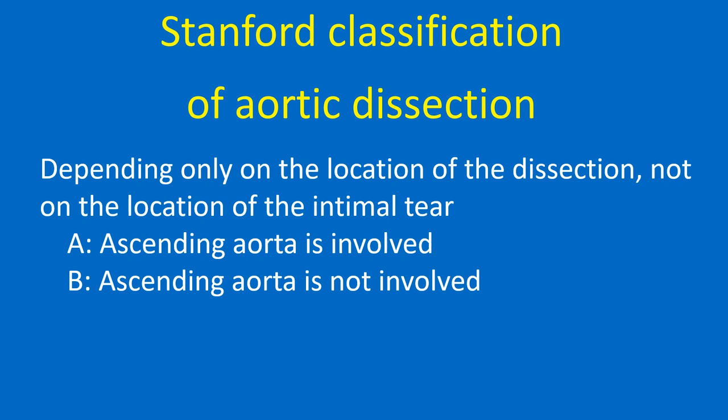Stanford classification of aortic dissection depends only on the location of the dissection, not on the location of the intimal tear. Type A: ascending aorta is involved. Type B: ascending aorta is not involved.